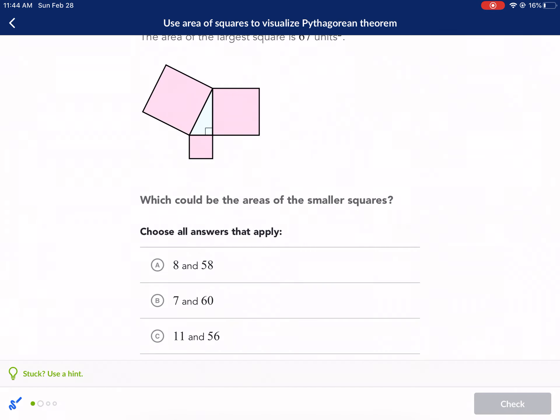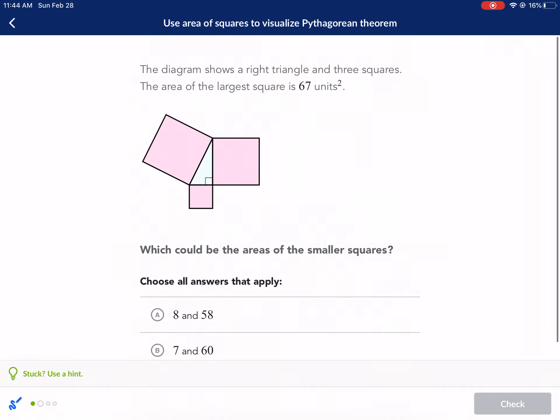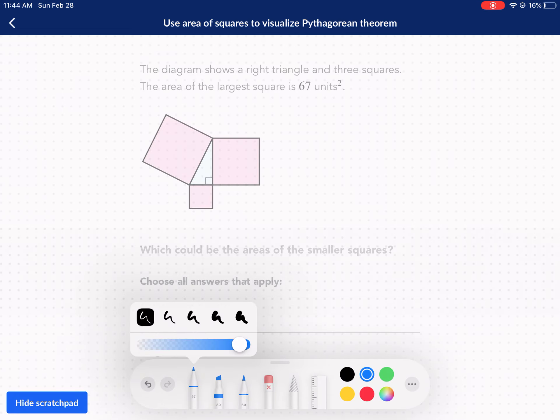Next up, the diagram shows a right triangle and three squares. The area of the largest square is 67 square units. That means this is already square units, essentially we've already squared it. That's the longest side, so it's going to be equal to the other two squares added together.